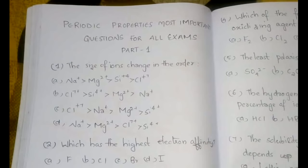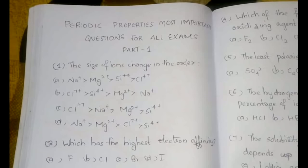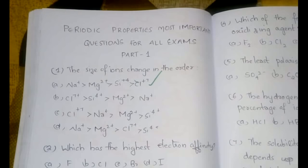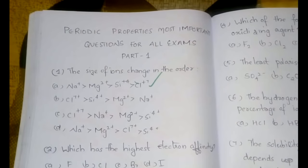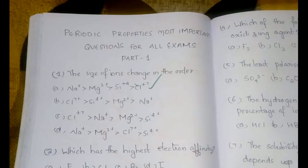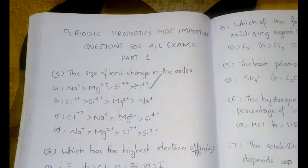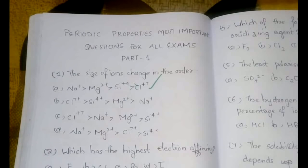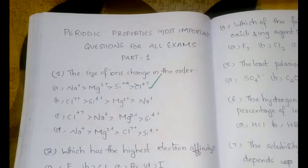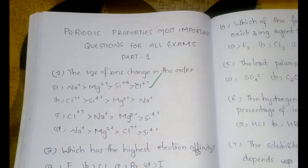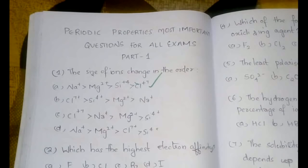Let's begin with the questions. The first question is: the size of ions change in the order — the answer is option A. The strategy here is that the number of electrons is the same in all four species. When electrons are equal, you have to see the nuclear charge. Higher nuclear charge means smaller size because the nucleus pulls electrons closer. Na+ has lesser nuclear charge than Mg2+, than Si4+, and Cl+7, so the size decreases in that order.